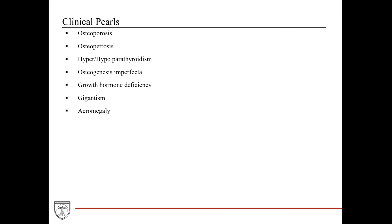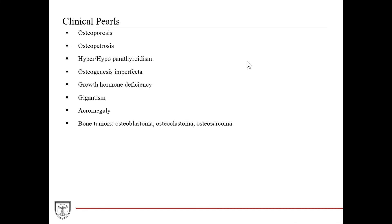Lastly, there are bone tumors. Osteoblastoma is a fairly rare primary neoplasm of the bone. It is comprised of osteoblasts that produce osteoid and woven bone tissues, and many osteoblastomas are benign. Osteoclastoma is also known as giant cell tumors — as the name suggests, it arises from the osteoclasts. The giant cell tumors are typically benign, but they can cause significant bone destruction based on the nature of the osteoclasts, as well as local recurrence even after surgical resection, especially if not all the tumor has been resected. And lastly, osteosarcoma is actually a malignant form of bone tumor. It is thought to arise from the osteoprogenitor cells from the mesenchyme. And with that brief tour of clinical pearls related to bone tissue.